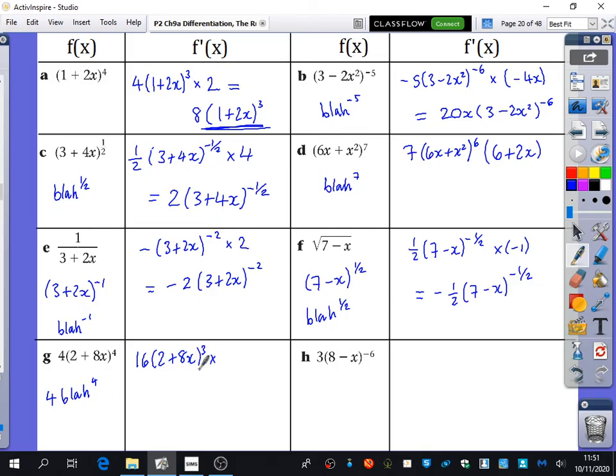multiplied by the derivative of this, which is 8. And 16 times 8 is 128. So it is 128, 2 plus 8x cubed.